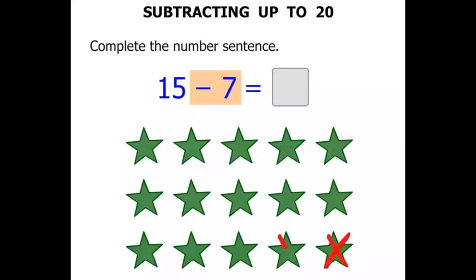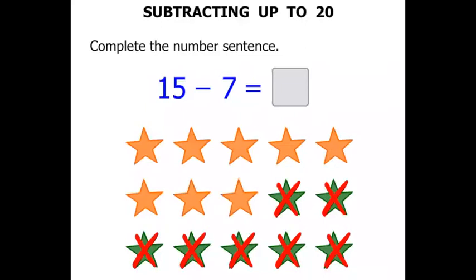1, 2, 3, 4, 5, 6, 7. So we have crossed out 7. How many are left? Let's count. 1, 2, 3, 4, 5, 6, 7, 8. So our answer there equals 8.